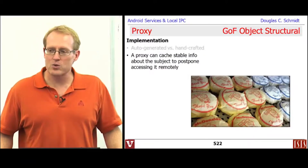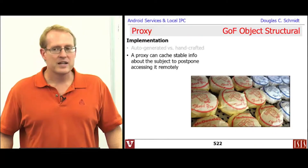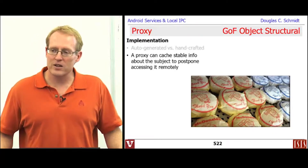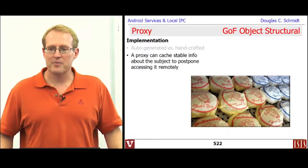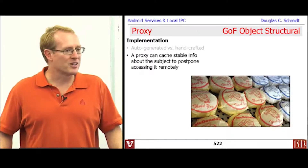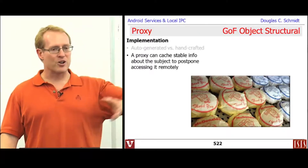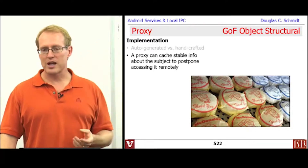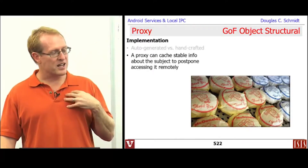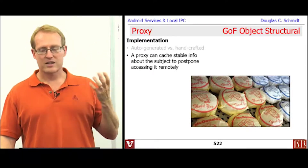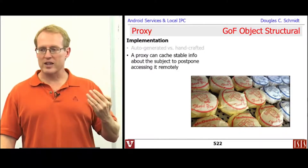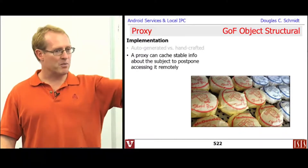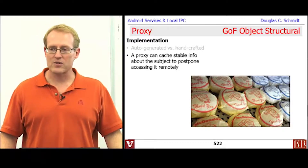Another question is, you can potentially use a proxy to cache certain information that is stable or immutable — things that don't change. Idempotent, as they sometimes say, where you get the same result if you call an operation multiple times. You can actually have the proxy cache that information locally so that when you need it, it's right there and you don't actually have to make a remote call to the other side.